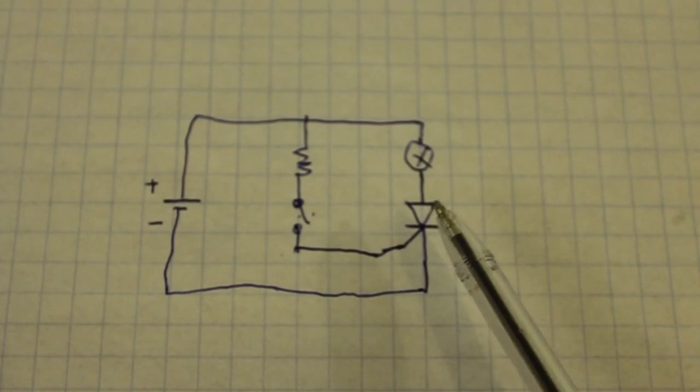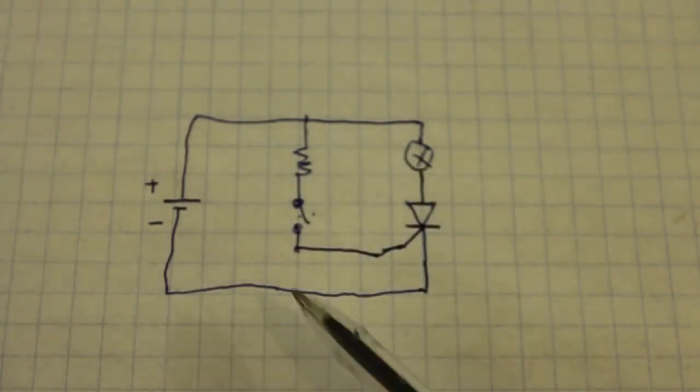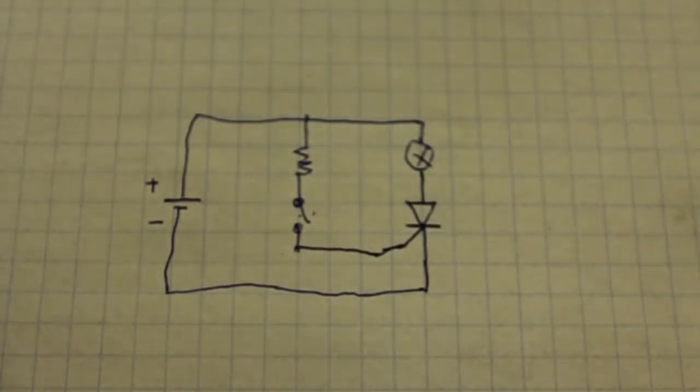Once the thyristor is on, you can disconnect the gate but the current will continue to flow. The only way to stop it is to disconnect the battery or to apply a negative voltage to the gate.